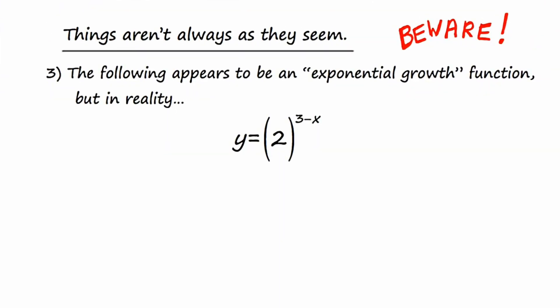Okay, the title of this slide is Things Aren't Always As They Seem, Beware. The following appears to be an exponential growth function, but in reality, well, the reason that I say this looks like an exponential growth function is because our base is 2, and if b is greater than 1, we have what's known as exponential growth.